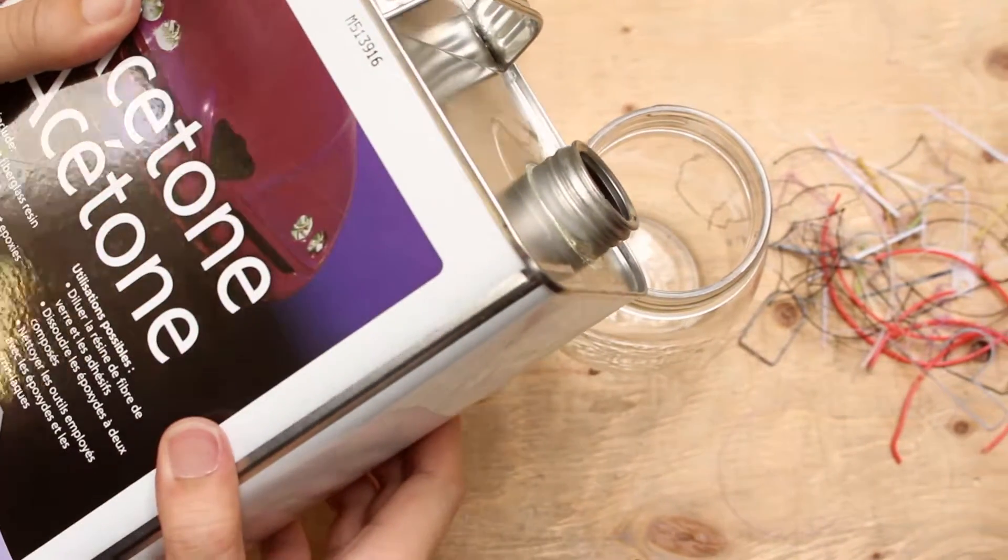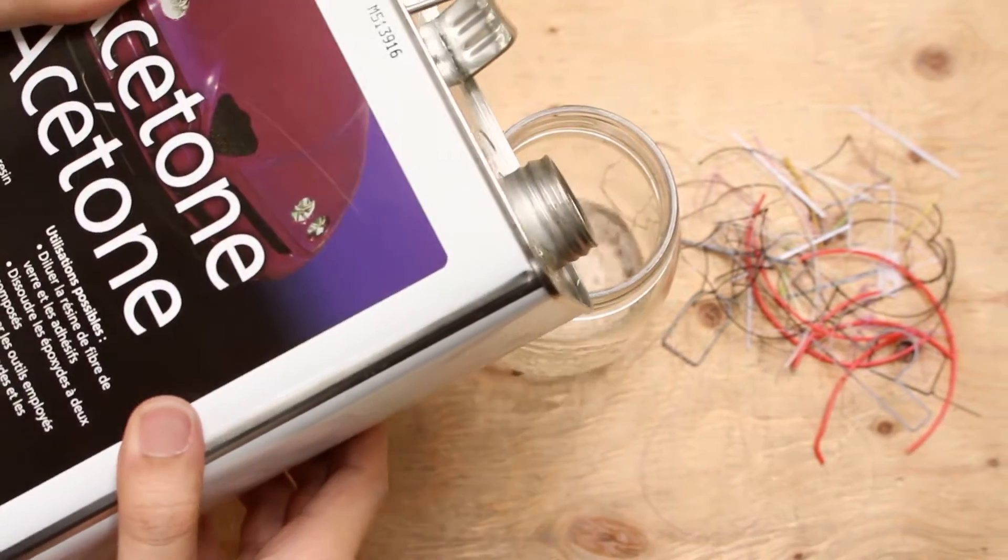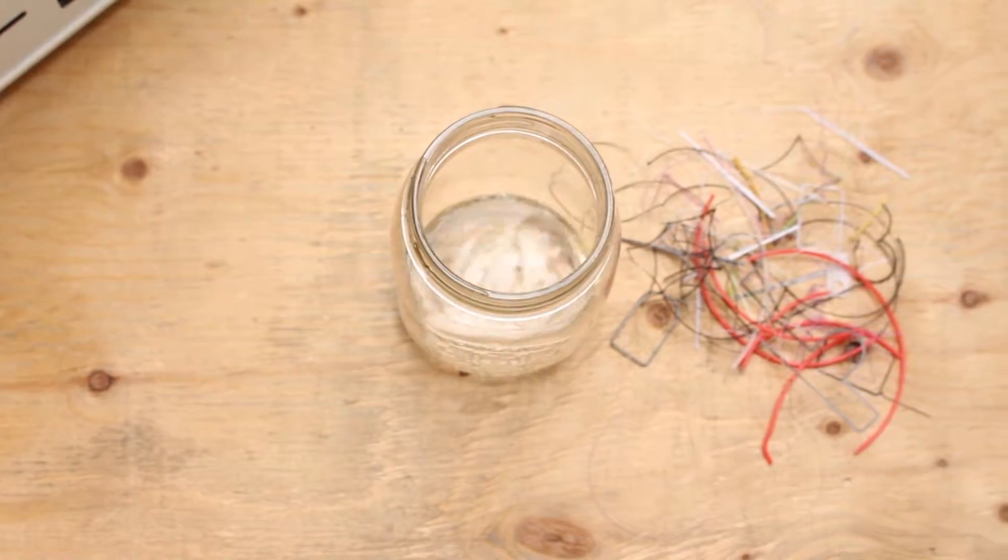How much acetone you use depends on how much sludge you want to make, but for the purpose of this test, I roughly poured in half a cup, about 125 milliliters.